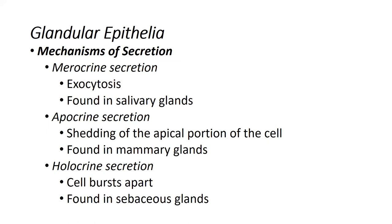Finally, holocrine secretion — as the name implies, the entire cell is ruptured. The cell is not spared as part of releasing those products; the entire cell must die and be ruptured out onto the surface. The example here is the sebaceous glands, and this is how the gland typically produces sebum or oil, which is released onto the skin.